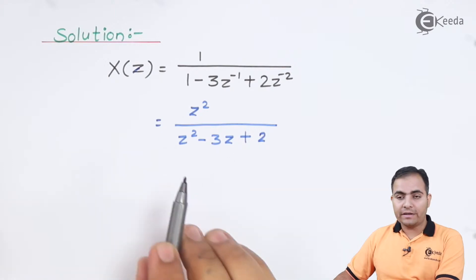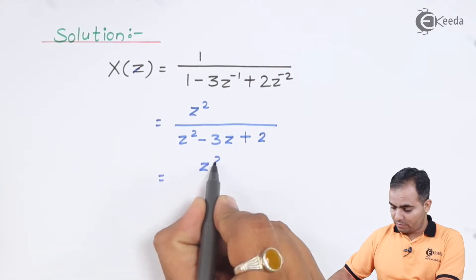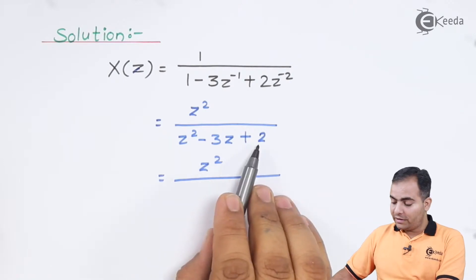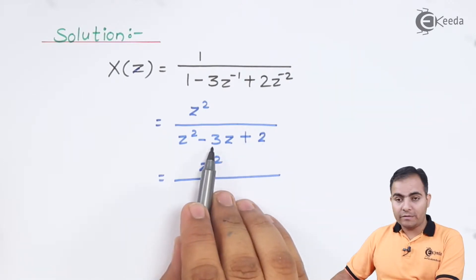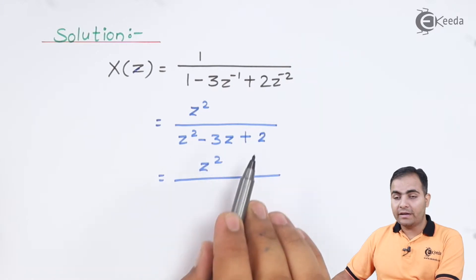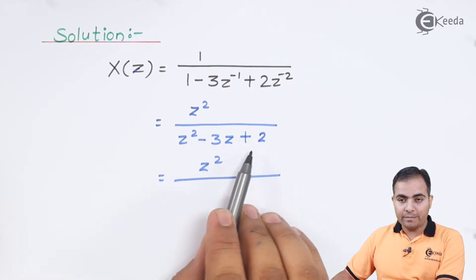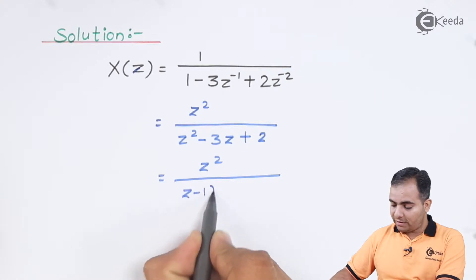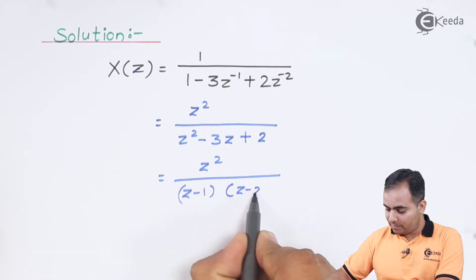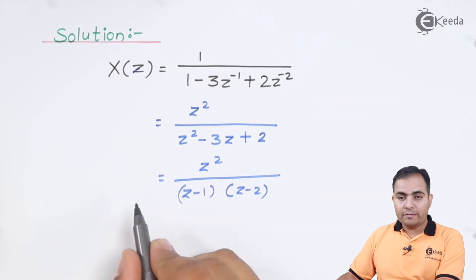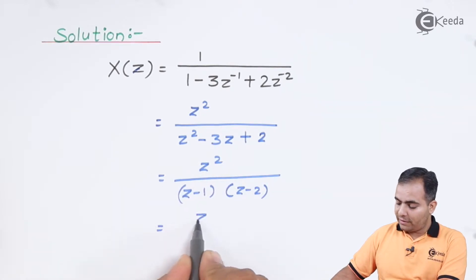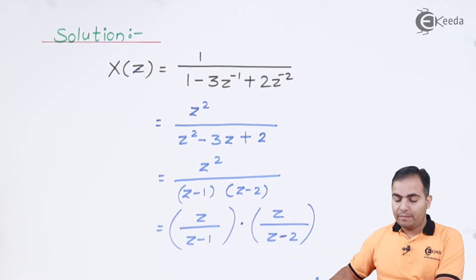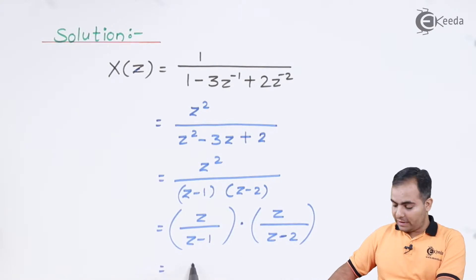Now I will factorize the denominator. The last term is the product of two digits and the middle term is their sum. Multiplying -2 and -1 gives +2, and adding them gives -3. So the factors are (z - 1)(z - 2). We split x(z) as x(z) = [z/(z-1)] × [z/(z-2)], calling the first x₁(z) and the second x₂(z).